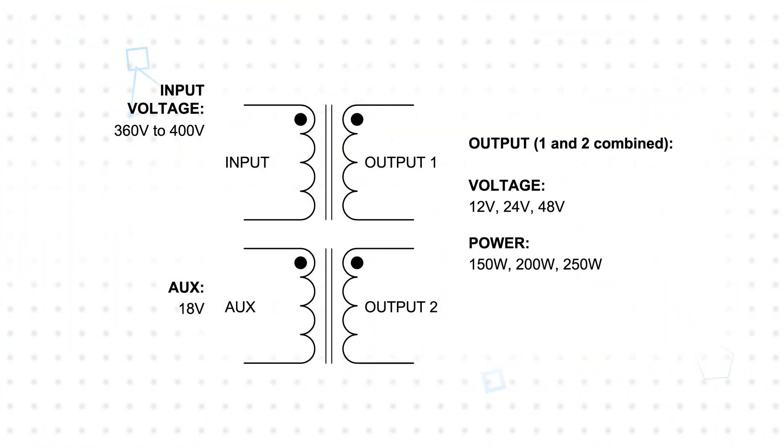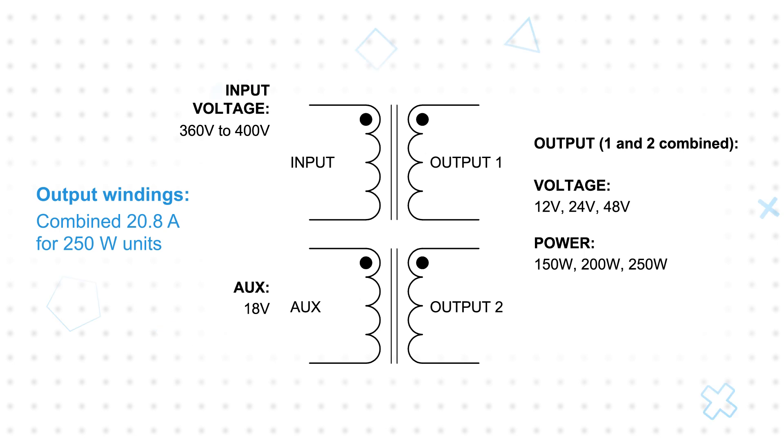Reducing the DC resistance on the transformer windings reduces copper losses. For the S-LLC Series, the output side windings are a key consideration, as they can carry up to a combined 20.8A for 250W units, and the S-LLC offers DCRs ranging from 2.5 to 26.5mΩ.